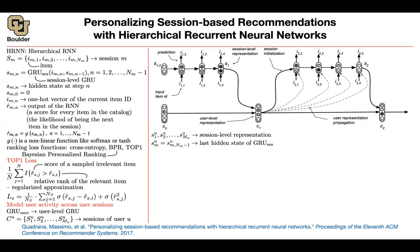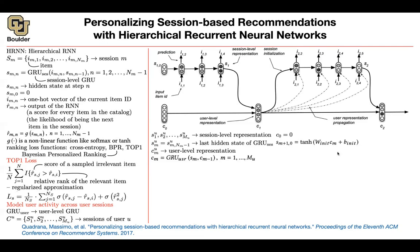The nth session — in this case the first session — is represented by that last hidden state. Initially your user-level GRU is going to have a hidden state of all zeros. These are your user-level representations. You take that vector of zeros and the session representation s1, and together c0 and s1 give you c1. Now the question is how you use c1: you can use it as the first input — the initial hidden state — to the next session that your user is going to work on, or you can concatenate it everywhere as additional information alongside the items going in.